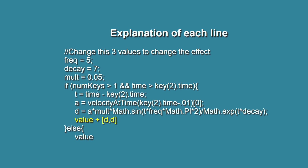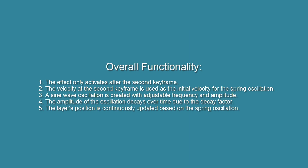This adds the displacement D to the current position value of the layer, since D is applied to both the X and Y axes. If the conditions are not met, the layer's position remains unchanged. Overall functionality: the effect only activates after the second keyframe. The velocity at the second keyframe is used as the initial velocity for the spring oscillation. A sine wave oscillation is created with adjustable frequency and amplitude, and the amplitude decays over time due to the decay factor. The layer's position is continuously updated based on the spring oscillation.